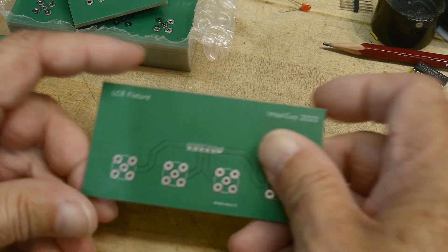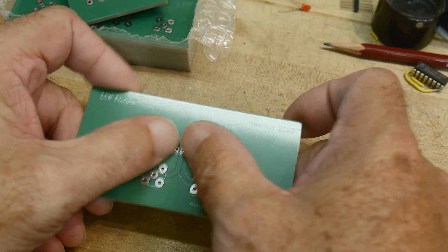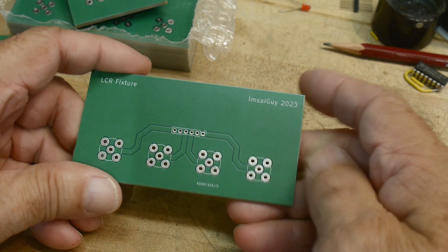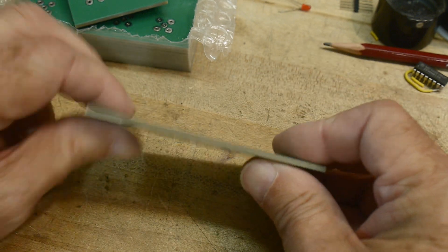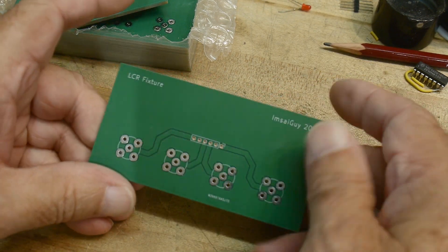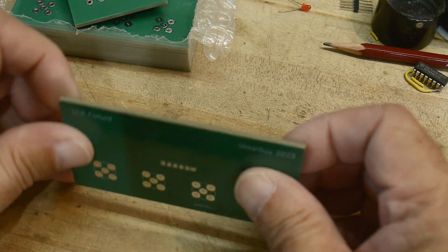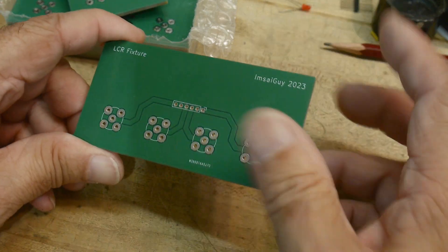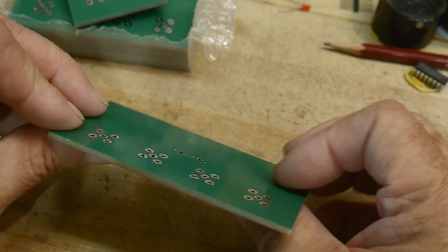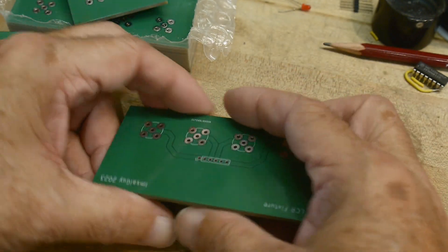Anyway, where were we? Yeah, so it's going to be a Kelvin contact right at the connector, some BNCs. Now, because this is actually not only a PC board, but it's actually mechanical in nature as well, I want this very, very rigid.